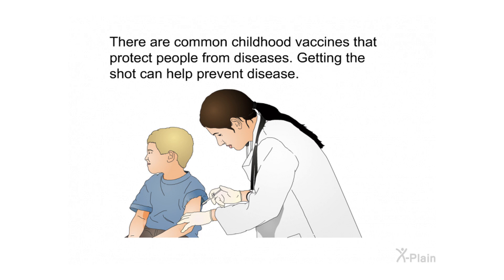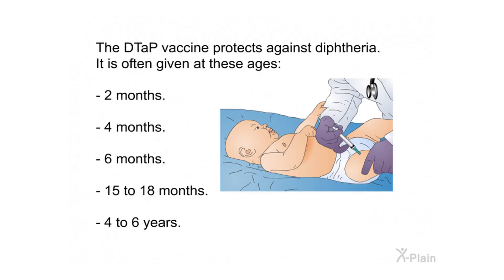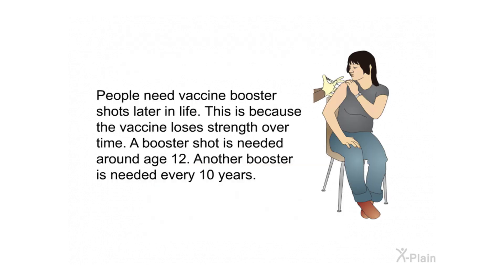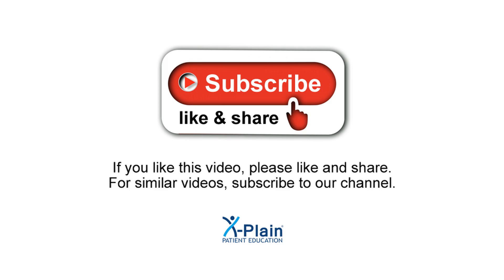There are common childhood vaccines that protect people from diseases. The DTaP vaccine protects against diphtheria and is often given at ages two months, four months, six months, 15 to 18 months, and four to six years. Talk to your health care provider to learn more about your child's vaccines and ask about any side effects. People need vaccine booster shots later in life because the vaccine loses strength over time — a booster shot is needed around age 12, and another booster is needed every 10 years.